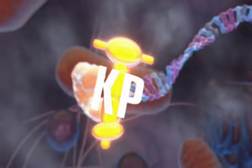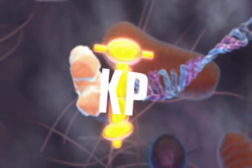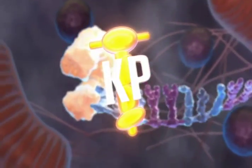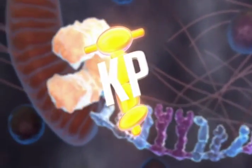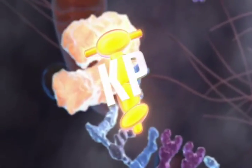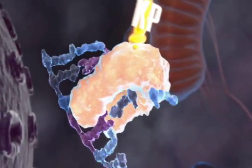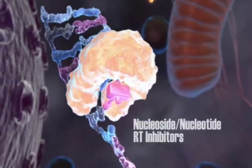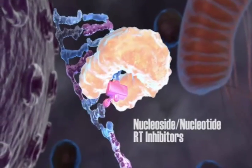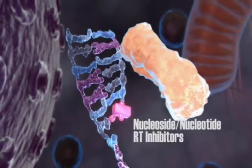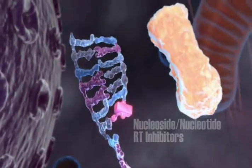This is a novel mechanism for antiviral drugs and sets KP1461 apart from existing nucleotide and nucleoside analogues, which simply inhibit reverse transcription to block viral replication.